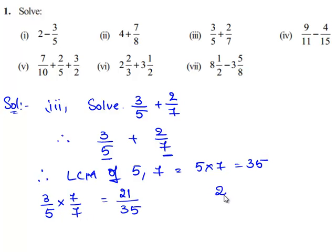Now the equivalent fraction for 2 by 7 is obtained by multiplying it with 5 on both the numerator and denominator. This gives 2 times 5 is 10 divided by 7 times 5 is 35.